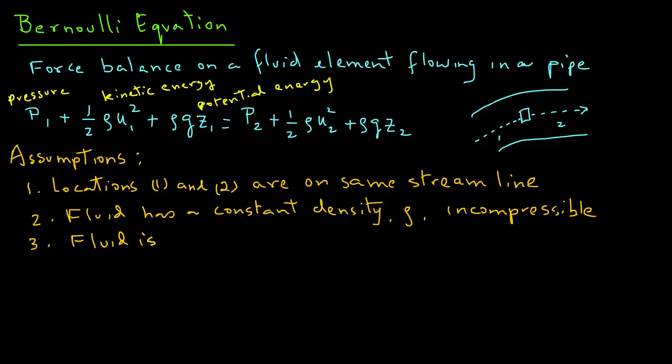Then, flow is inviscid. By that, we mean the viscosity is zero. Now, if fluid has low viscosities, still Bernoulli equation gives us quite good results. Four, that flow is steady.